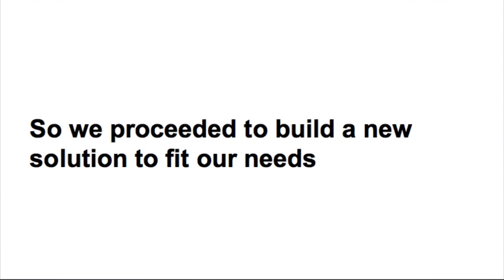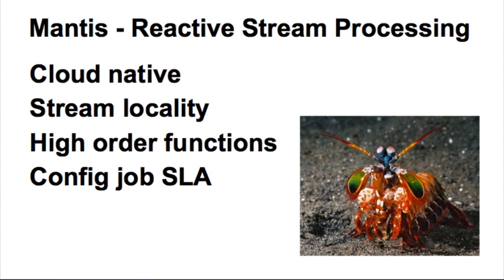So what did we do? We went ahead and proceeded to build our own solution. We call that solution Mantis. It's a cloud native system. It supports stream locality. It has higher order functions for the programming interface. And it has a configurable job SLA. When you submit a job into Mantis, you can configure the SLA for that particular job.